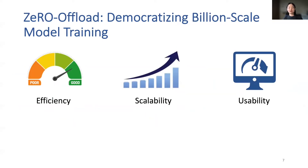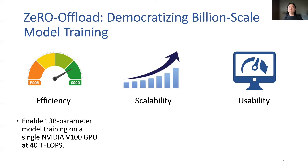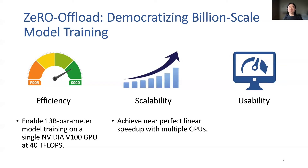We introduce Zero Offload, a novel heterogeneous deep learning training technology that enables training of multi-billion parameter models on a single GPU. Zero Offload is designed around three goals: efficiency, scalability, and usability. It enables training of 30 billion parameter models on a single NVIDIA V100 GPU at 40 teraflops. Working with Zero-powered data parallelism, Zero Offload achieves near-perfect linear speedup with multiple GPUs. Zero Offload is available as part of an open-source PyTorch library and does not require model refactoring to use.